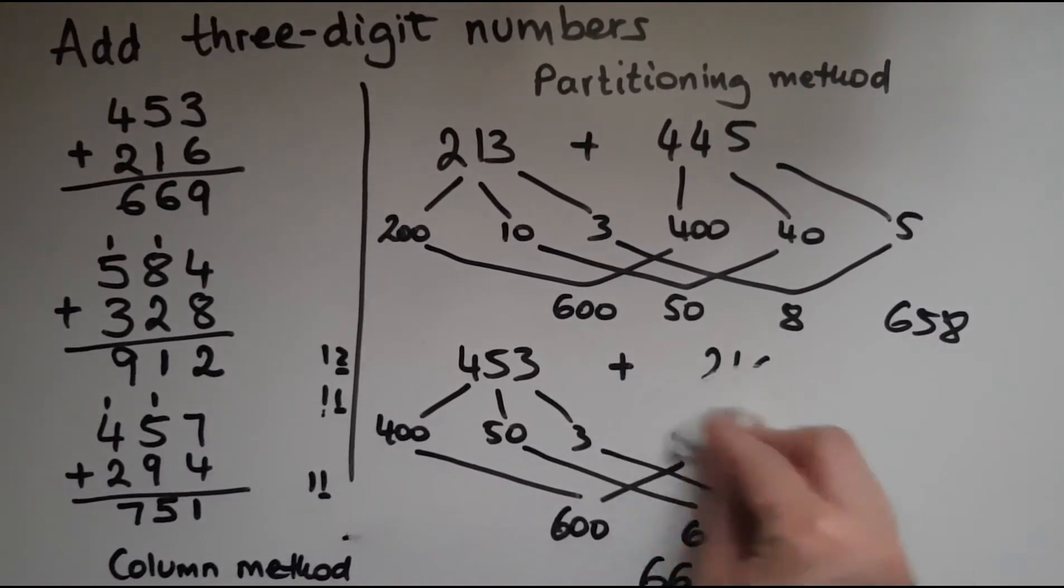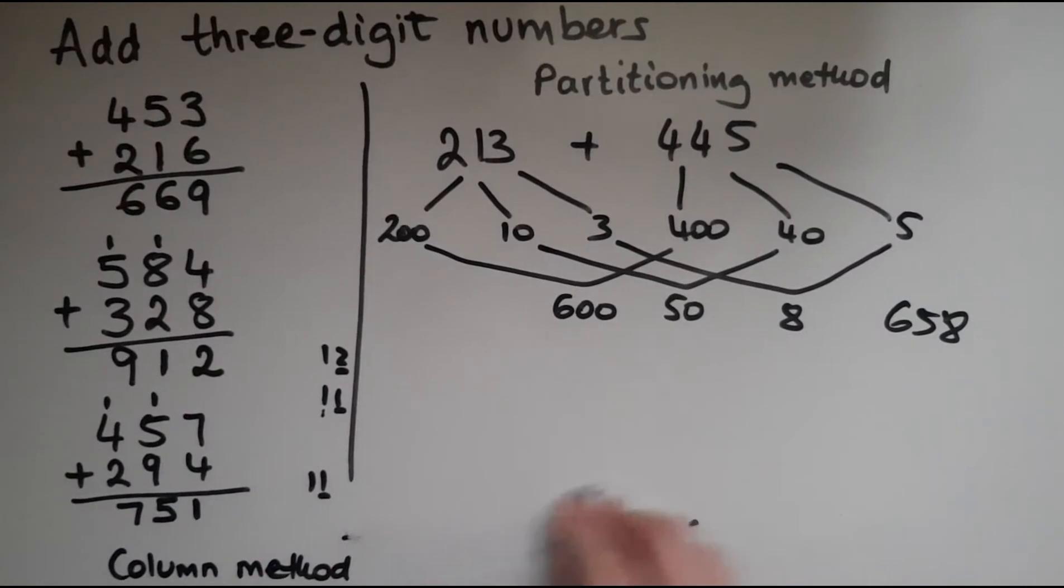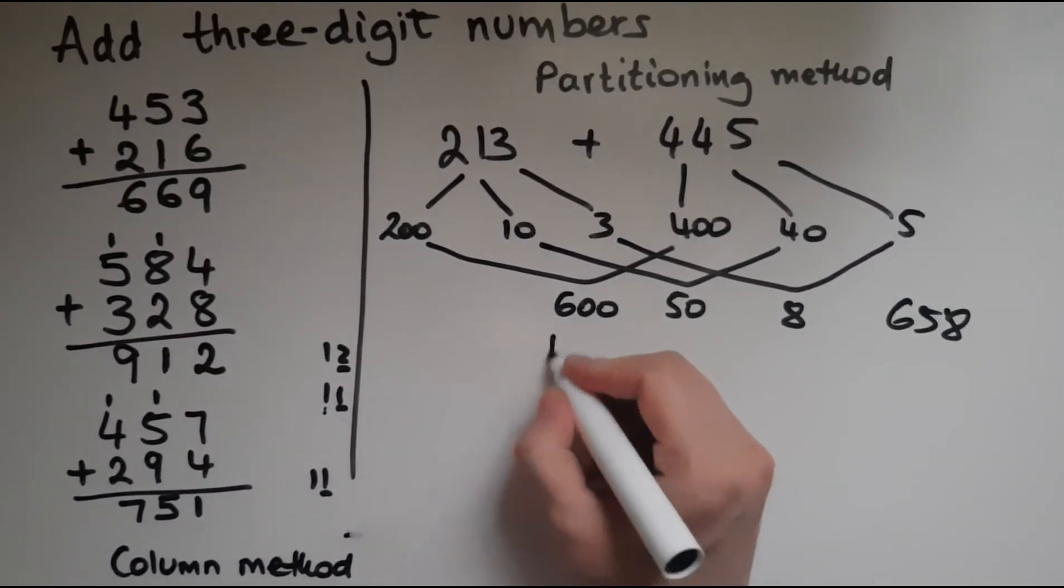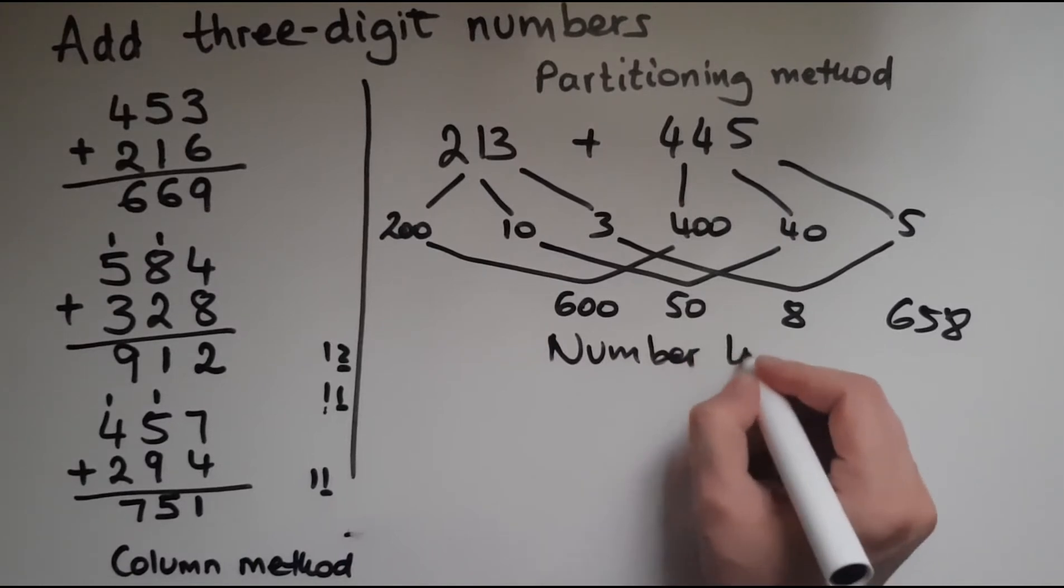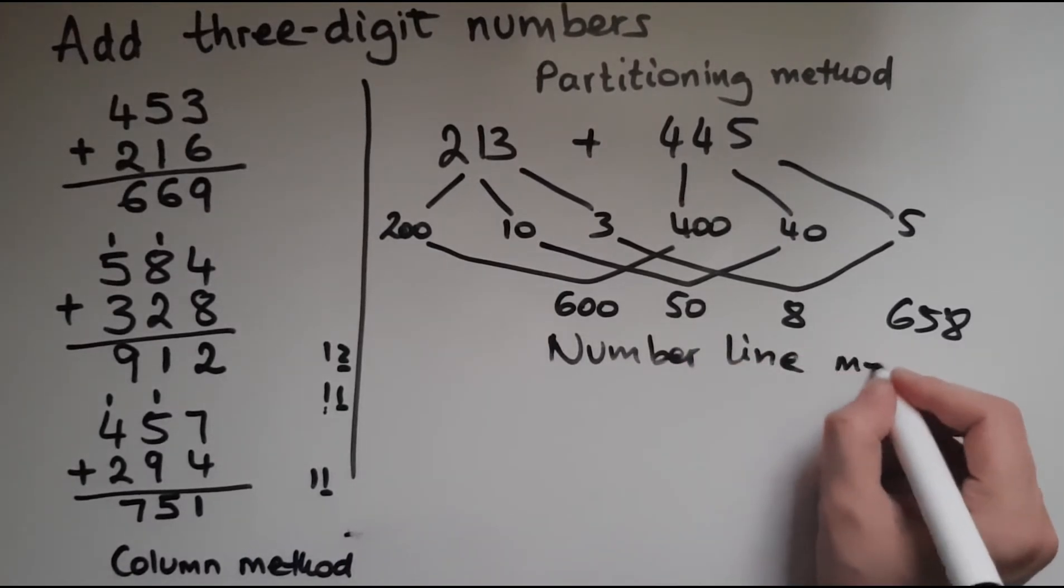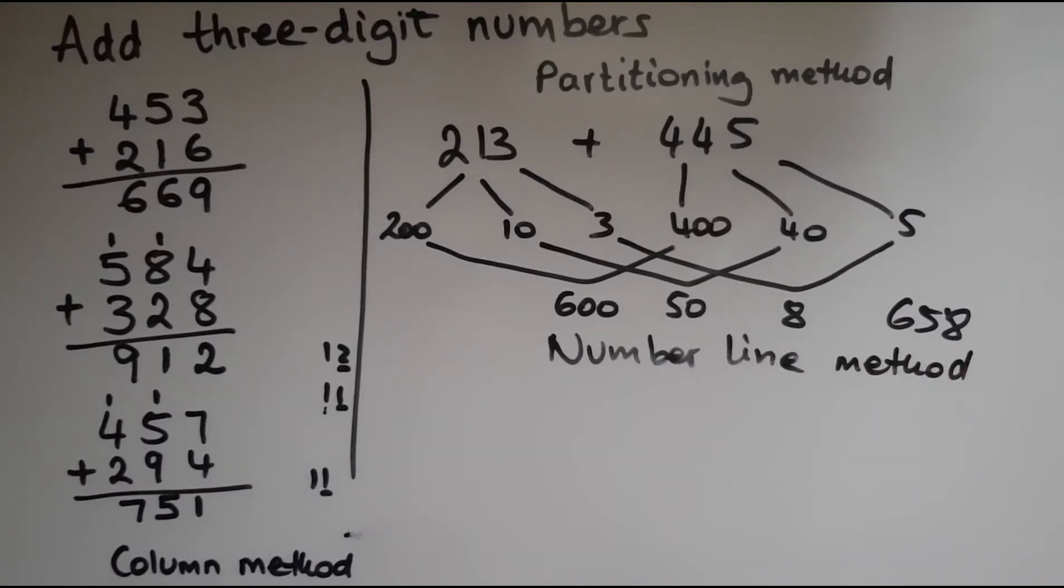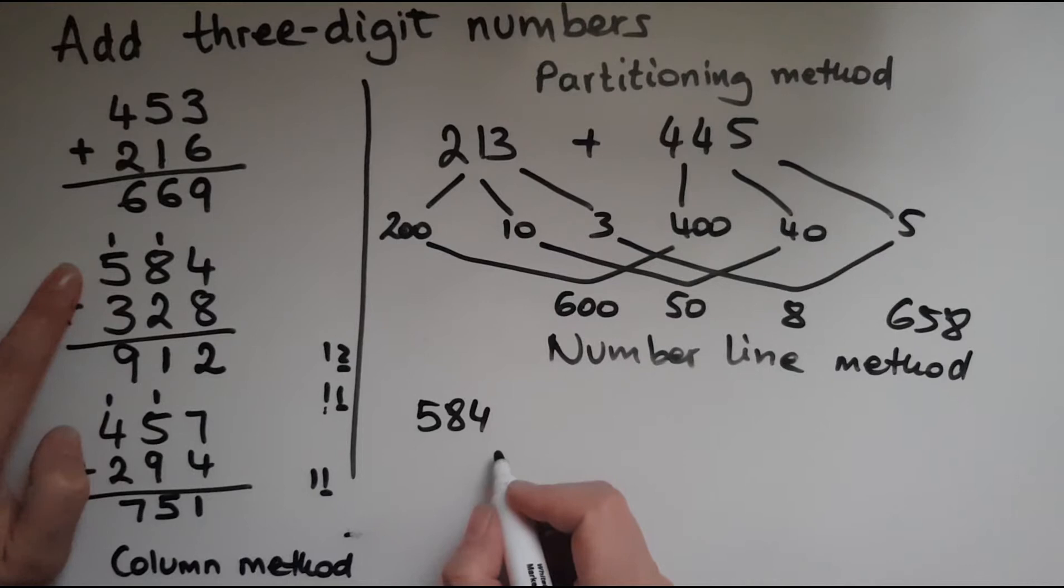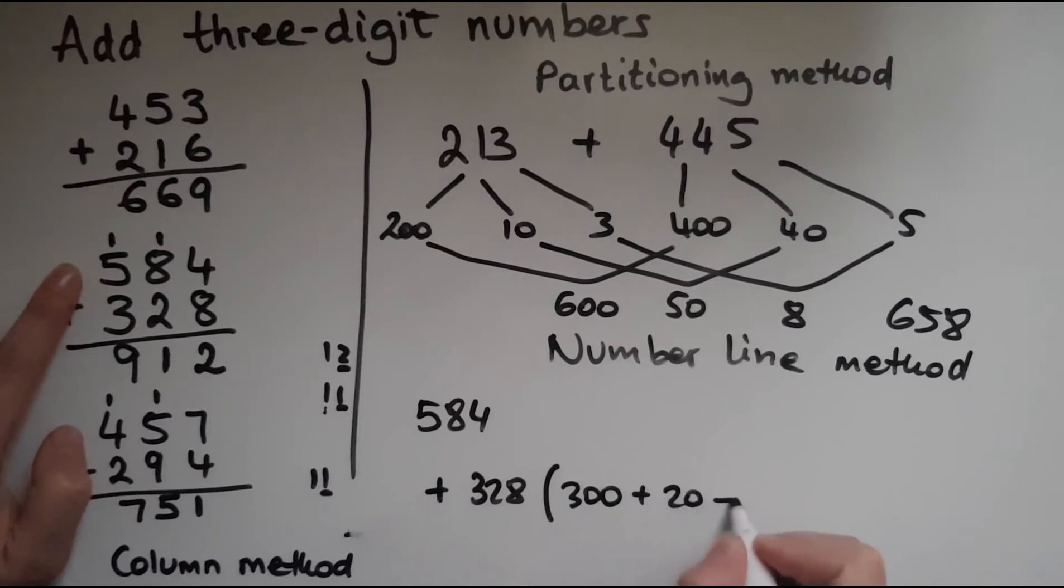We'll now look at the number line method. So this is how that looks like. Number line method. So let's have 584 as the starting point. What we're going to do is we're going to add to this 328, which is broken down into 300, 20 and 8. So I'll add these in turn. 584.